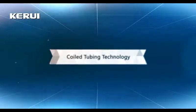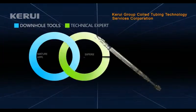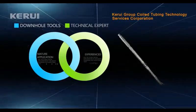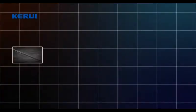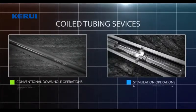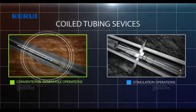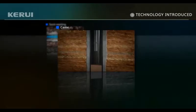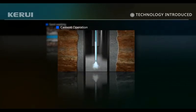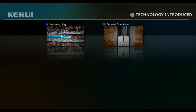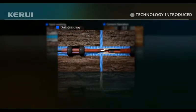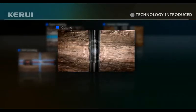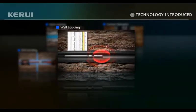Curie Group Coiled Tubing Technology Services Corporation has mature application of various downhole tools and experienced technical experts. Conventional downhole operations include: sand washing, cement operation, drill grinding, scratching, milling, well logging, and fishing.